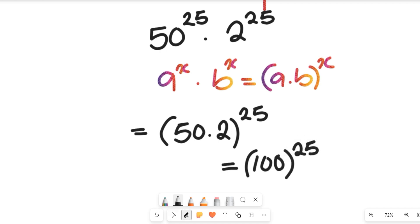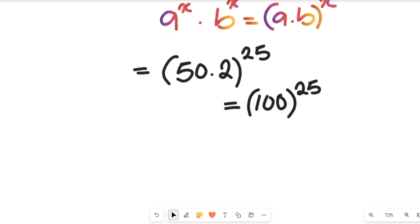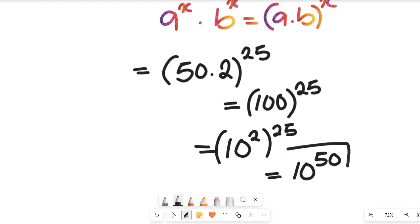So the solution to that expression is simply equal to 100 to the power of 25, which can still be simplified to give us 10 to the power of 2 multiplied by 25. So this finally will give us 10 to the power of 50, and this is the solution to that expression that is given to us above here.